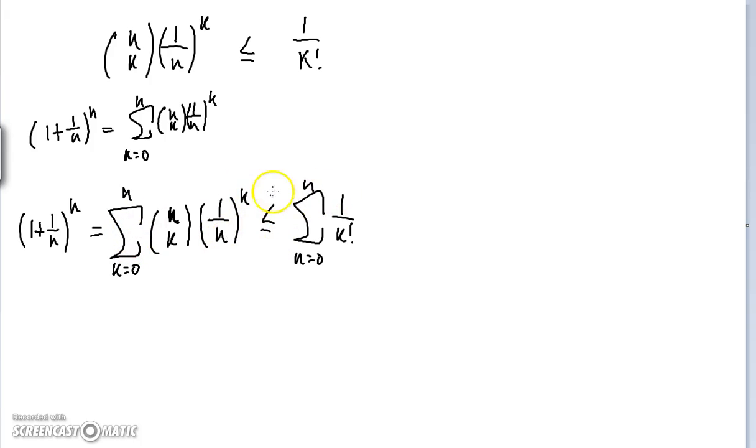This is actually really interesting because we found some early bounds of 1 plus 1 over N to the power of N. It's definitely bounded above by some series. Now, if we can somehow show that this series over here is also bounded above by some number, then we show that 1 plus 1 over N to the power of N is bounded above by some number.